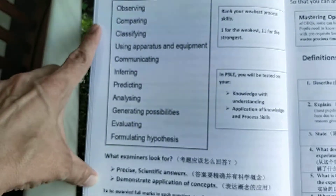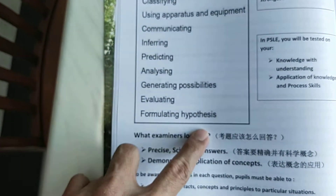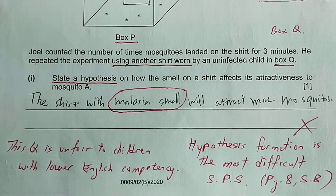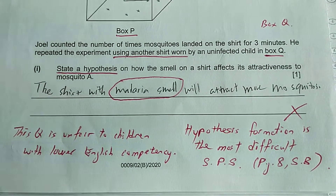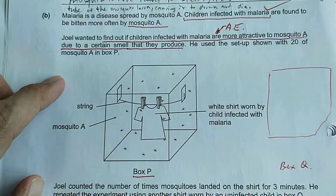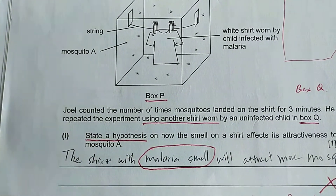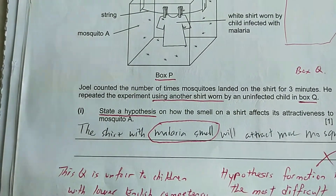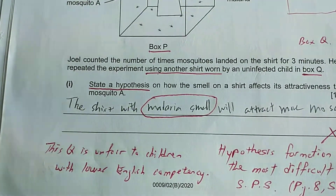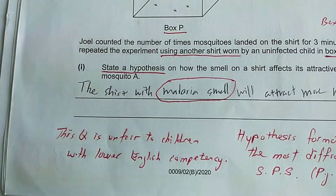As I mentioned in my YouTube channel, formulating a hypothesis is the most difficult skill in the MOE primary science process. Students need to think of what is the expected outcome of the experiment. One student wrote 'malaria smell' as the answer, but I believe this student was confused by the long sentence. It's not malaria smell — it's actually that the mosquito with the malaria virus is attracted to people with a certain smell or body odor, and then goes to sting the person. It's the smell of the people that the mosquito detects, not the smell of the mosquito itself.